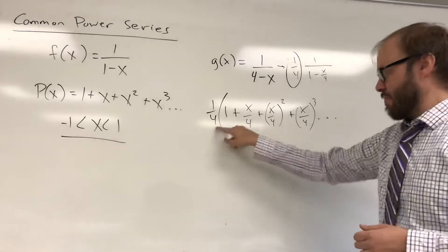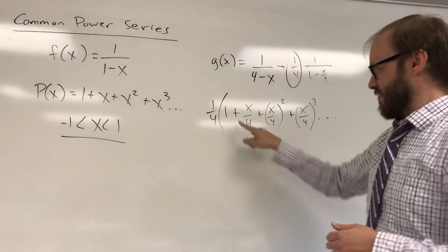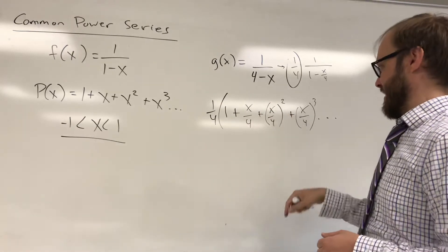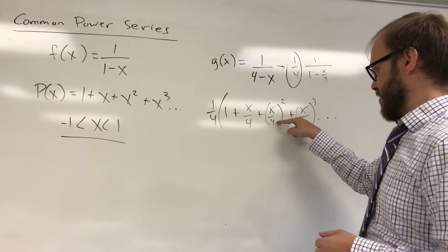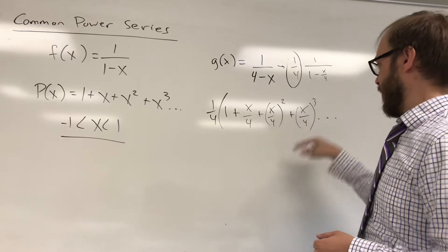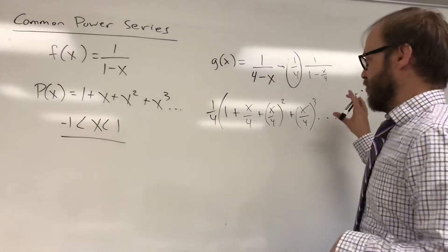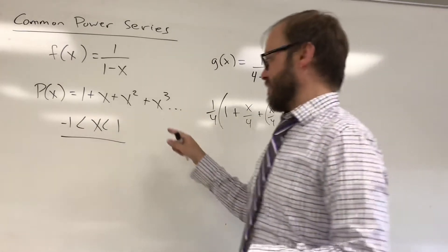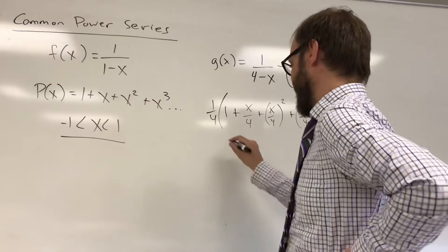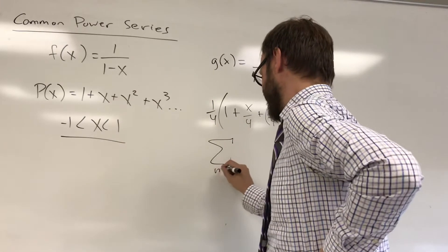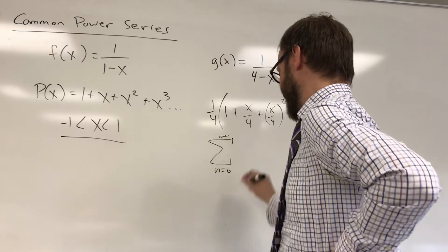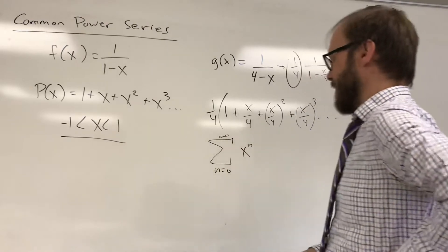So you could go ahead and multiply this through, and you could write this as 1 fourth plus x over 16 plus x squared over, what would that be, 64, and so on. You could do that sort of thing. If you need the general term, you might want to go back to the original setup. The original setup is that this is the sum from n equals 0 to infinity of x to the n.